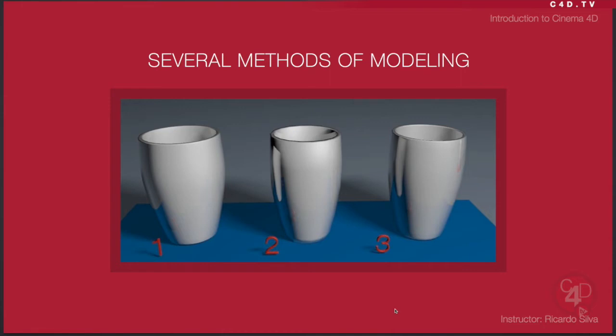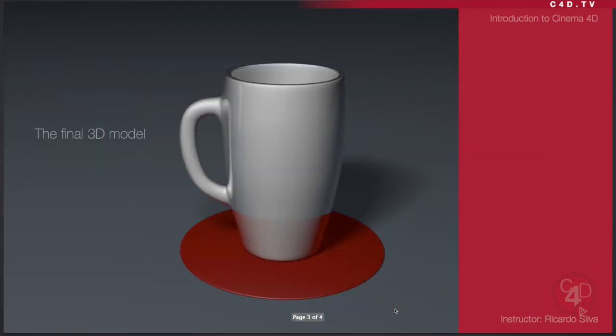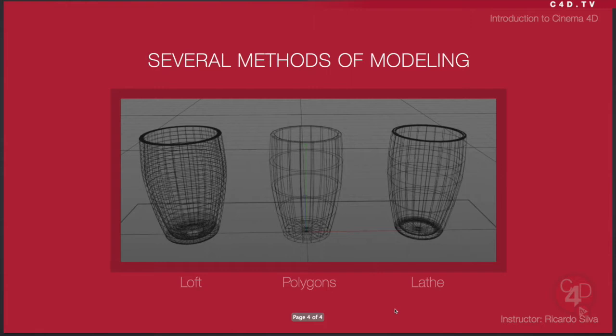I propose to model a coffee mug in three different methods. Those methods are going to let us do this coffee mug the way that it should look at the end. Those methods are: one is the loft, the other one is using polygons, and the other one is also using a lathe object.